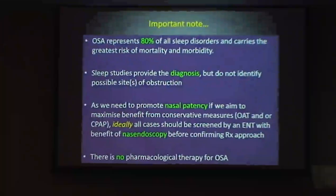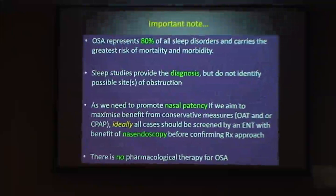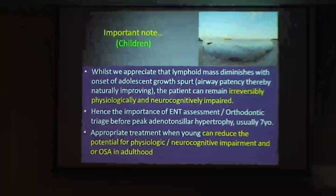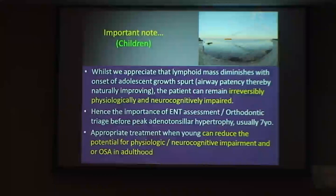Important notes: OSA carries a lot of mortality and morbidity. Sleep studies provide the diagnosis but don't identify sites of obstruction. We need to maximise nasal patency. There is no pharmacological therapy for OSA — we can't take a tablet for it. Lymphoid tissue diminishes with the onset of the adolescent growth spurt, but the patient can remain irreversibly physiologically and neurocognitively impaired for the rest of their life. Simply because you weren't doing your job. Now you're aware of this, you've got to start doing it.